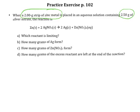Remember that we're rounding to one decimal place. The molecular weight of zinc is going to be equal to 65.4 grams per mole, while the molecular weight of silver nitrate, AgNO₃, is going to be equal to 169.9 grams per mole.